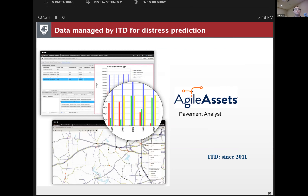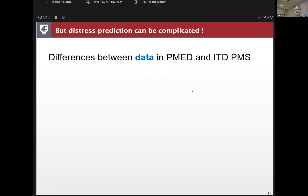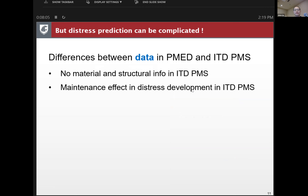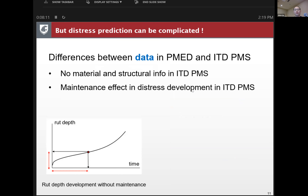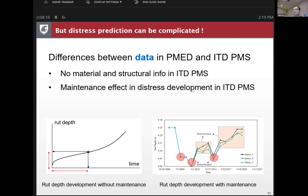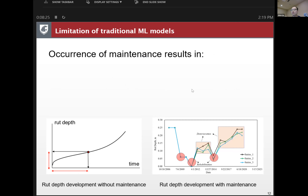This is the data managed by the Idaho DOT for distress prediction — let's look at what real data looks like in the management system. The differences between the ideal pavement model and the Idaho Pavement Management System are: first, they have no material and structure information in the Idaho PMS, so we lose a lot of useful information for building traditional machine learning models. Second, maintenance effects appear in the distress development in the Idaho PMS, so we cannot always see a clean pavement performance curve.